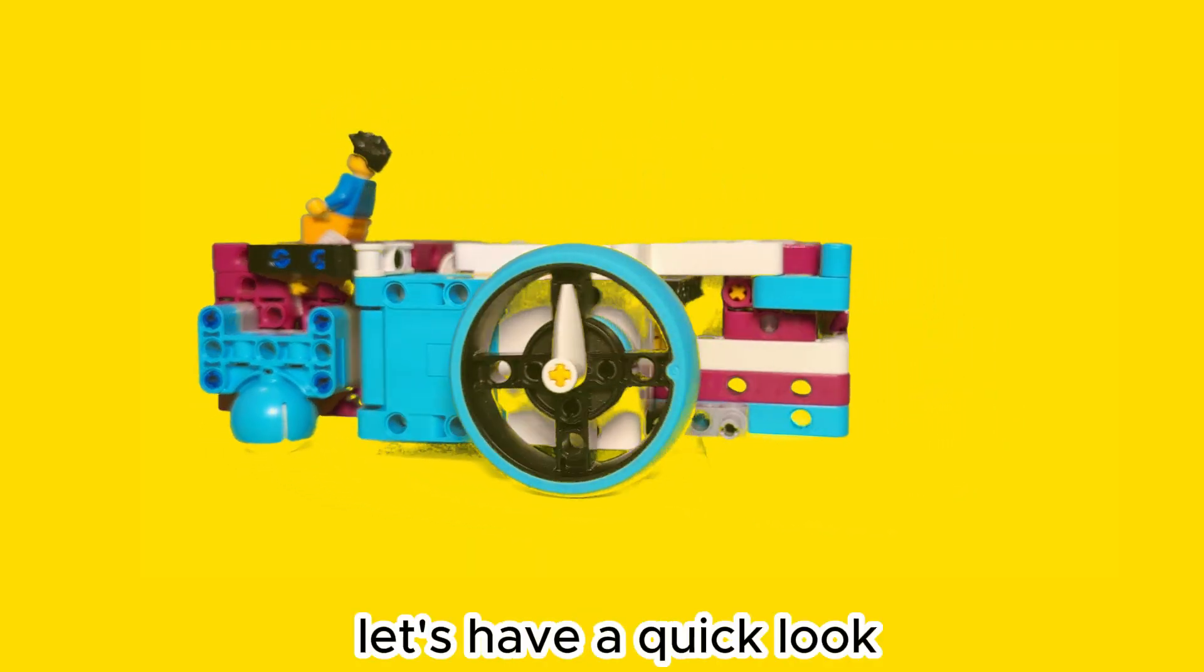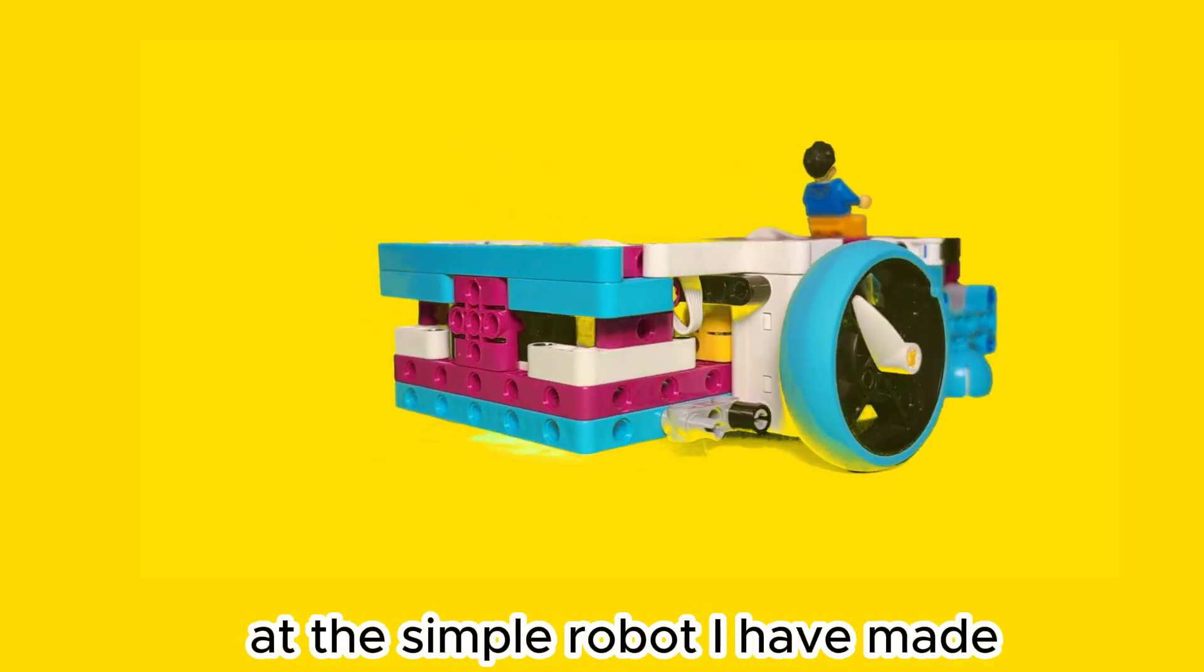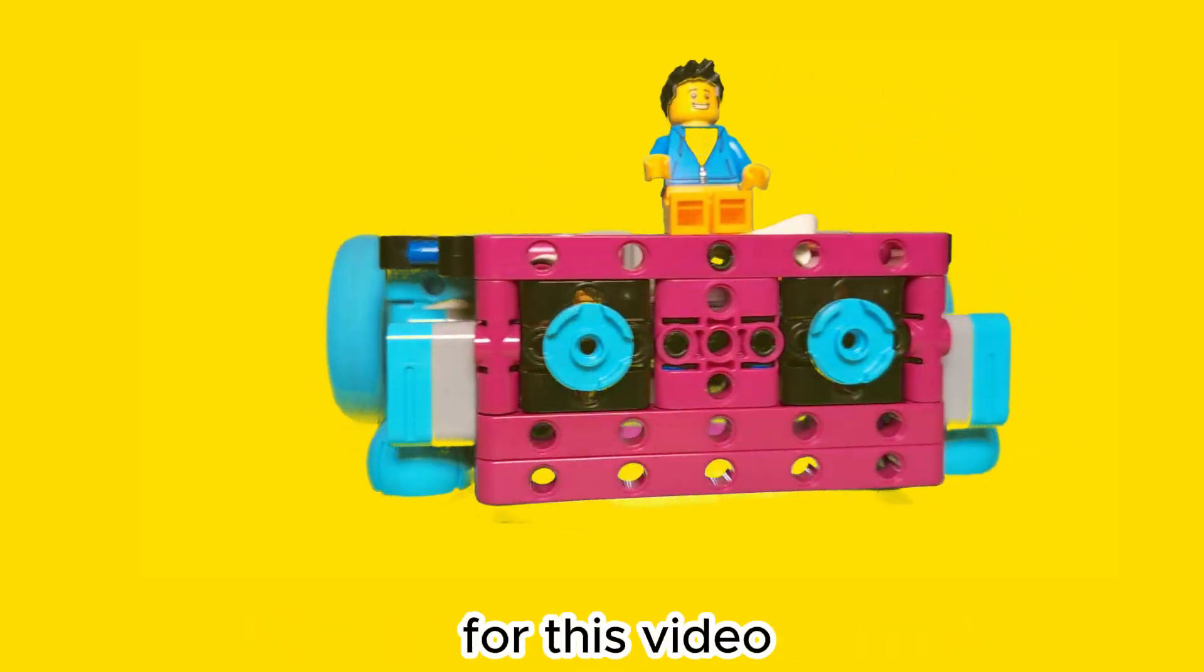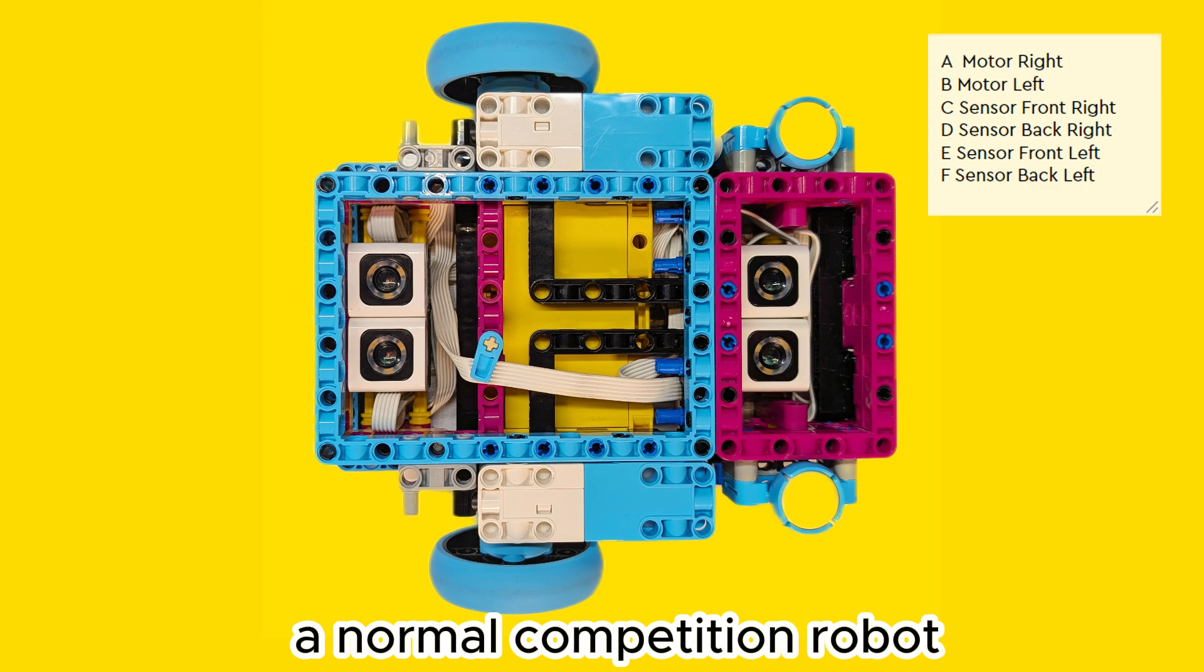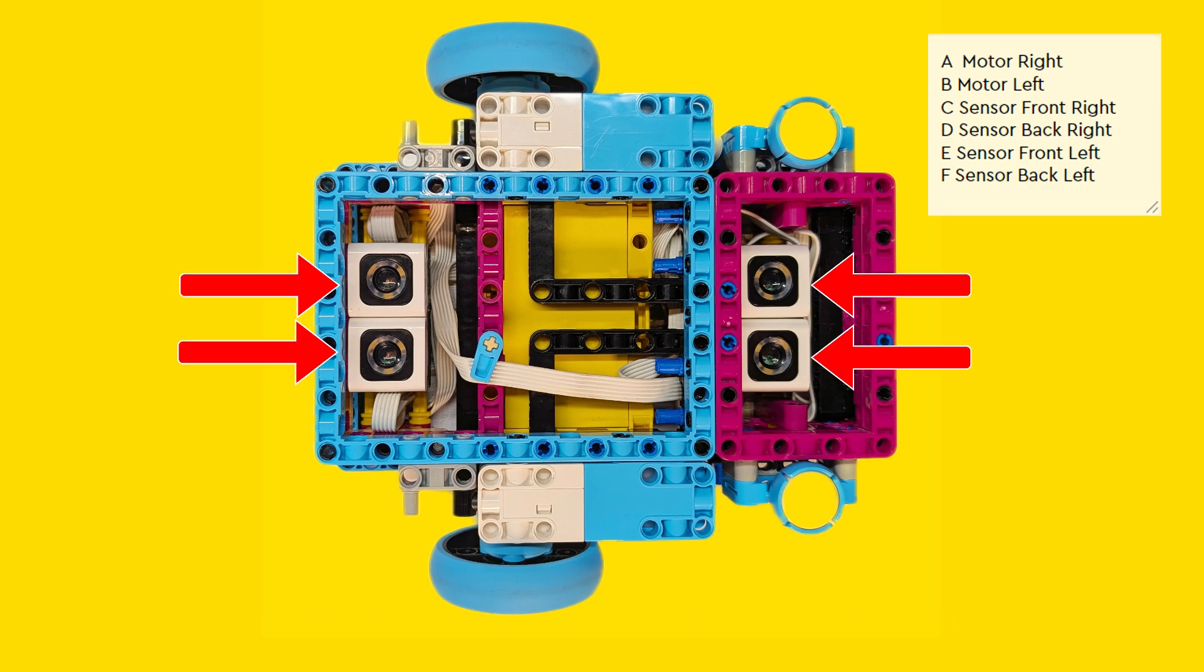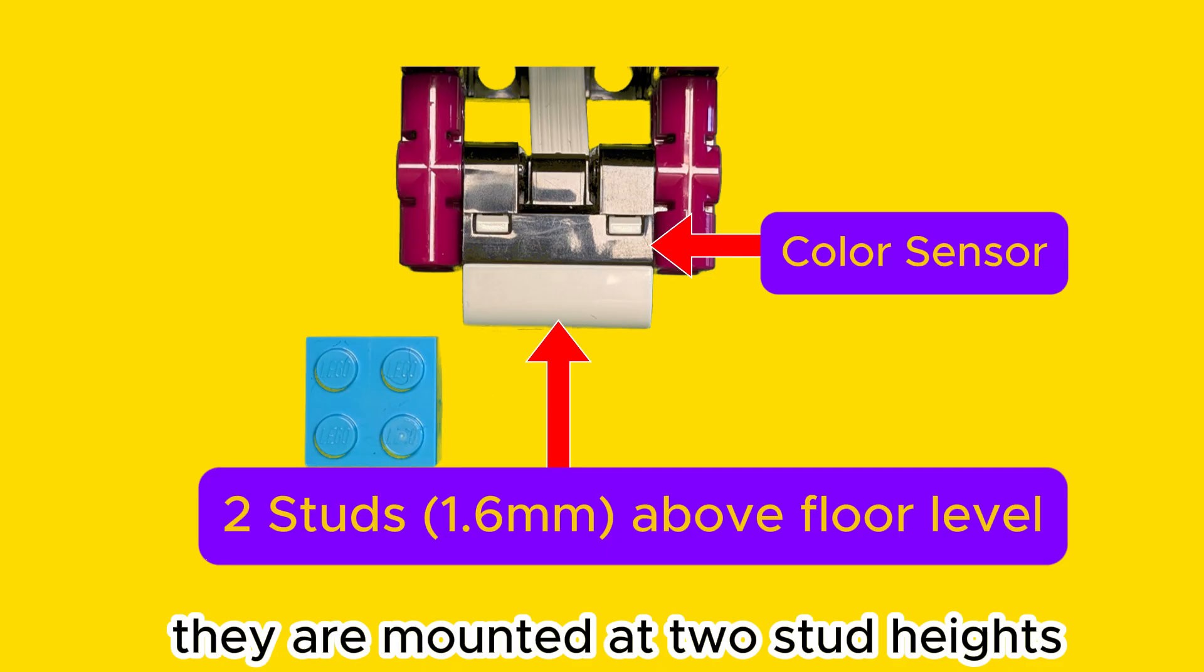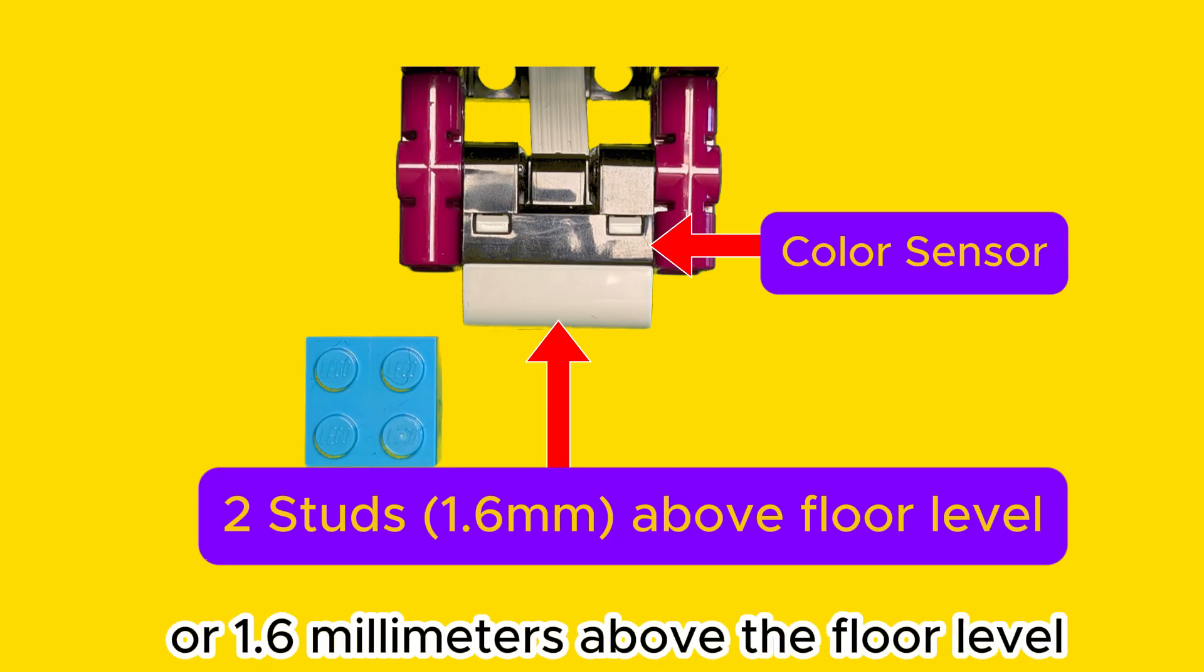First let's have a quick look at the simple robot I have made for this video. From above we see the hub mounted directly between the two motors. A normal competition robot would have one or two sensors. I am using four here just to show the possibilities. They are mounted at two stud heights or 1.6 millimeters above the floor level.